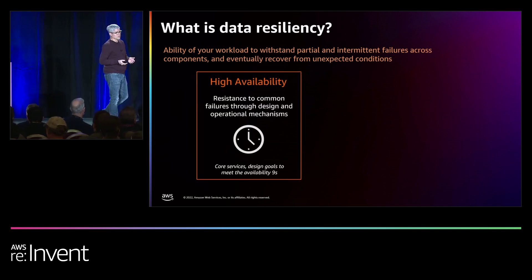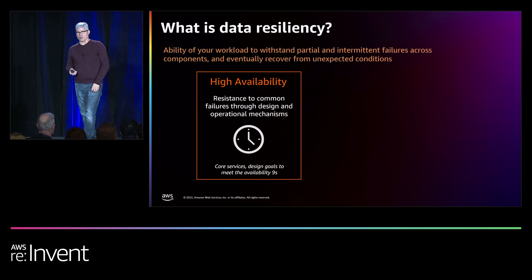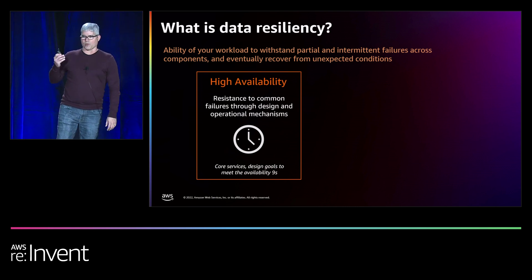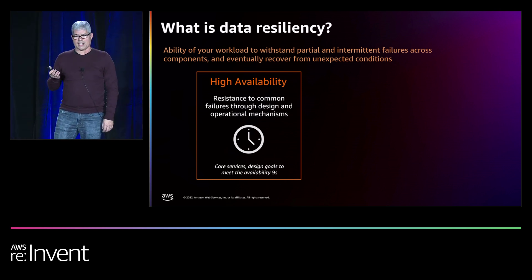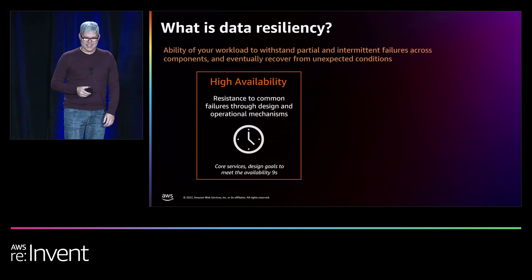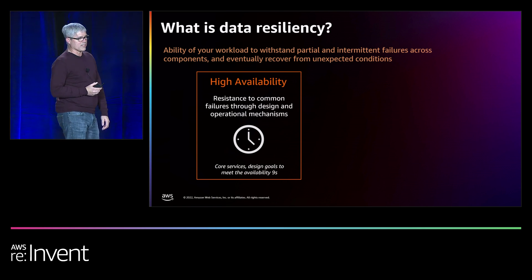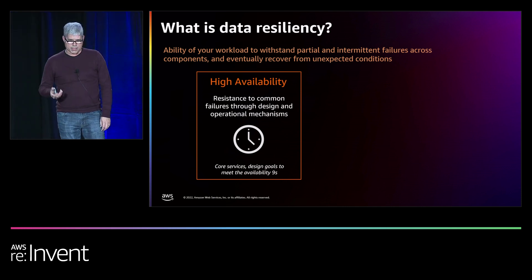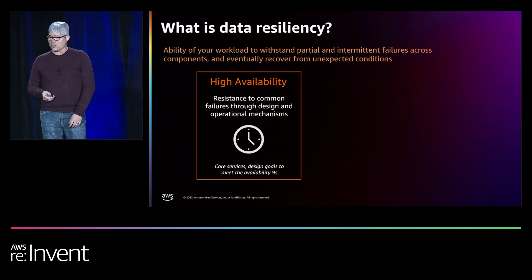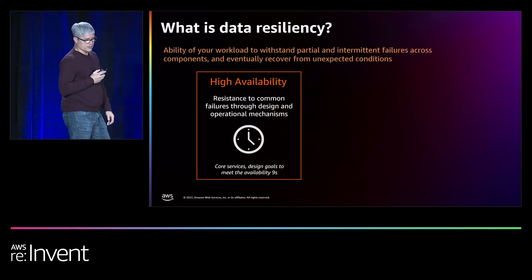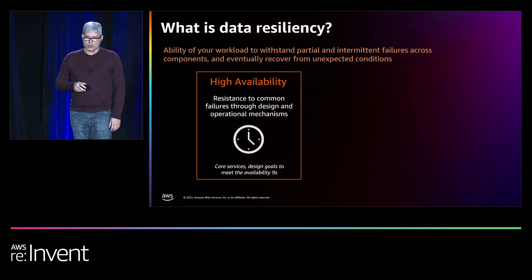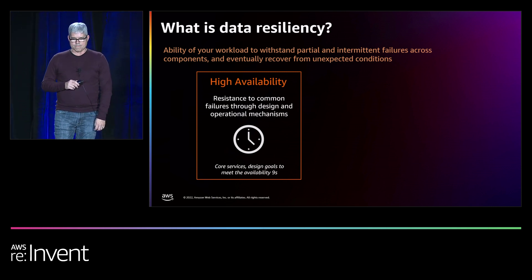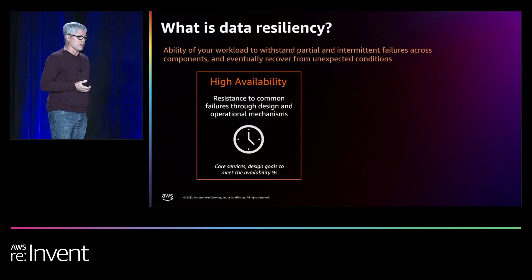What customers expect today is for applications and services to be always on and reliable — they want high availability. Customers don't care about hardware failures in your data center, software upgrades, or that it's Cyber Monday and your website is getting hammered by a thousand times the normal traffic. This creates a need for highly distributed and sophisticated application architectures supported by distributed teams with multi-dimensional skill sets. High availability is about preventing loss of service — dealing with smaller scale but more frequent events like component failures, network issues, and load spikes.